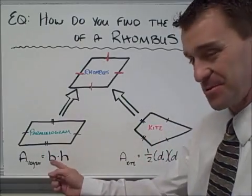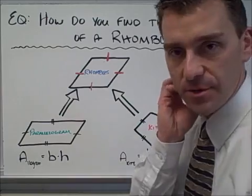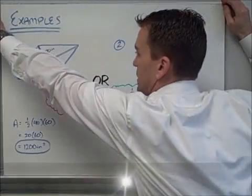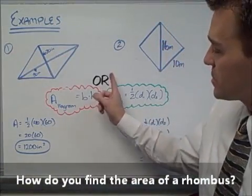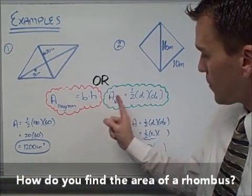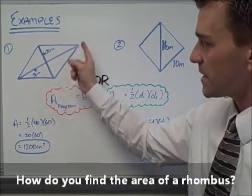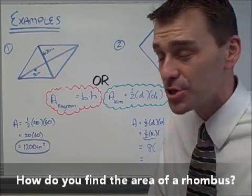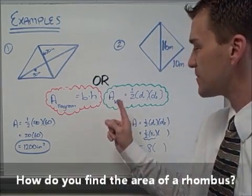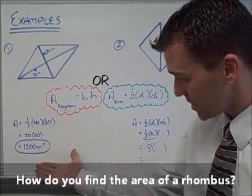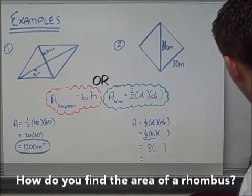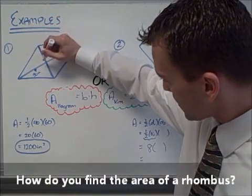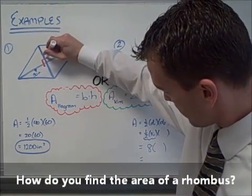So you've got two options for the area of a rhombus. Let's apply these to a couple of examples. Example one: you see this rhombus — you've got two options, either the area of a parallelogram or the area of a kite formula. When I see diagonals given, my gut instinct says to use the kite formula. One thing to remember about rhombi: the diagonals are perpendicular.